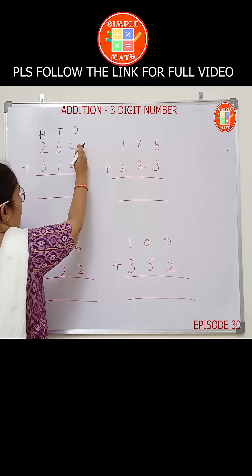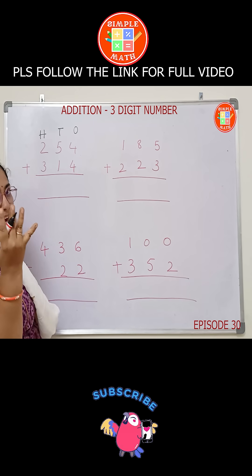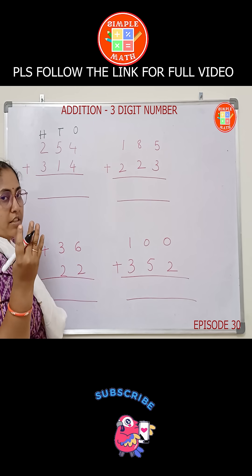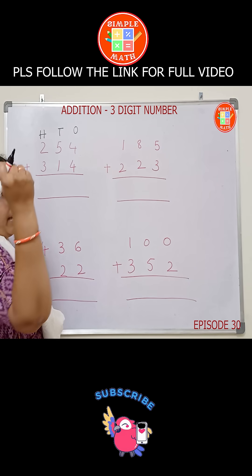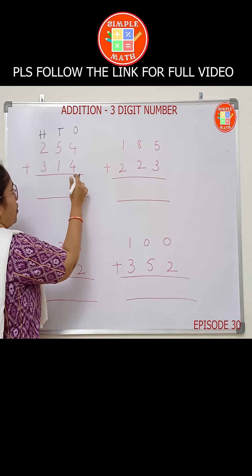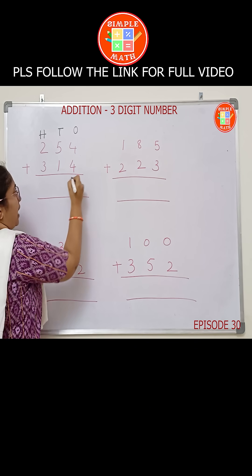So 4 plus 4: put 4 in your mind, 4 on your fingers, count after 4 — 5, 6, 7, 8. What number do you get? 8.